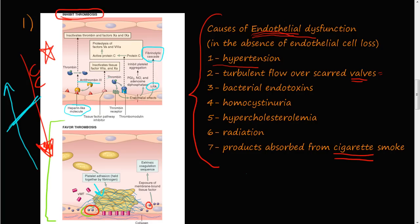Another thing is you have PGI2, nitrous oxide, and adenosine diphosphatase that inhibit platelet aggregation, and that's all because thrombin binds to the thrombin receptor, which causes these few steps over here.